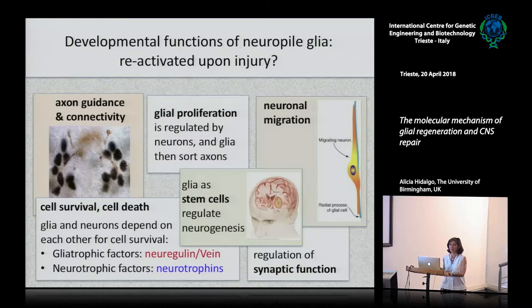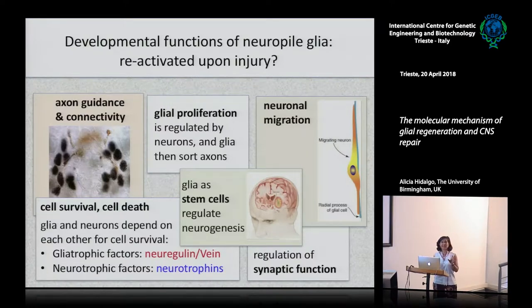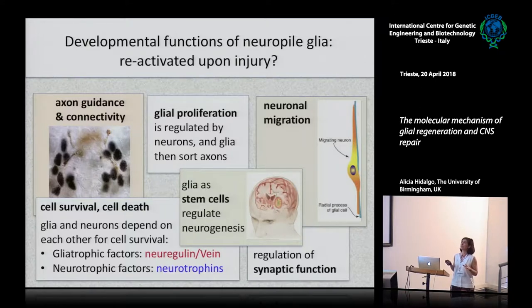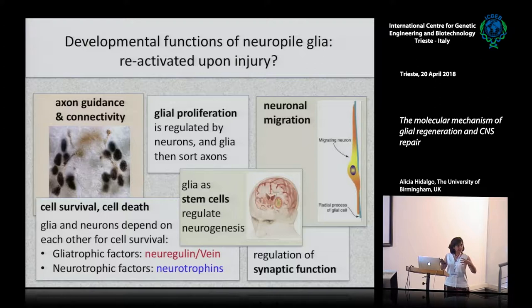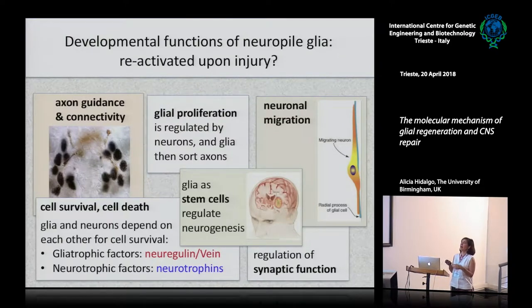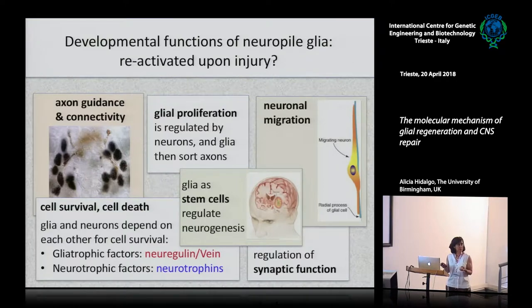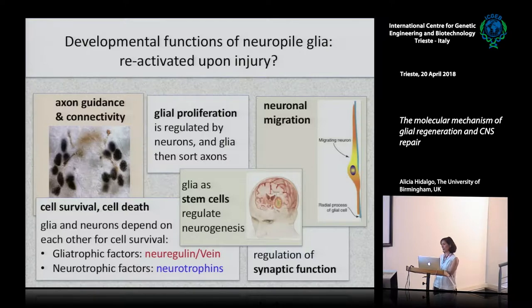This is one of the projects in my lab; the other project has to do more with neurons. We have a glial project. The philosophy behind this project is we want to understand how glia and neuron-glia interactions work in development, with the idea that if we can understand this, can this help us understand regeneration? Could it be that when you have an injury, some of the events that go on in cells could be a reactivation of programs that normally take place during development?